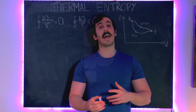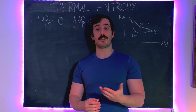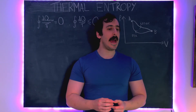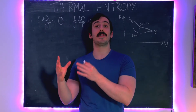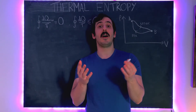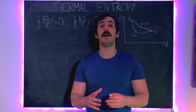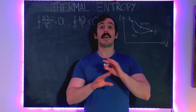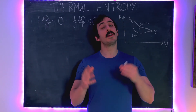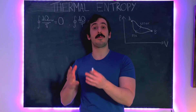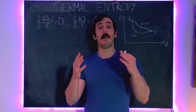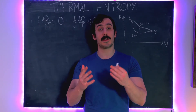Hello everyone. In today's video we are going to look at the thermal definition of entropy. This was the way entropy was initially defined and discovered by the physicist Clausius. In the next video we are going to look at the statistical mechanics definition of entropy — entropy in terms of macrostates and microstates — which many people think is arguably a more fundamental definition. But we'll also show that those two definitions are entirely equivalent, and it's really useful to see both of these ways of describing entropy, because both of them shine a different light on exactly what entropy is.